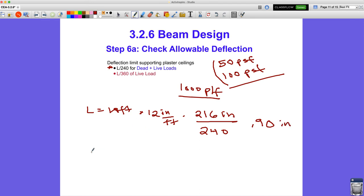Now, the deflection limits for live loads only is less than that. And that's because, in this case, we're supporting a plaster ceiling. Plaster ceilings are very brittle and can crack. So we have to do that again. It's still a 216 inch beam divided by 360 this time, which gives us a deflection limit of 0.6 inches.